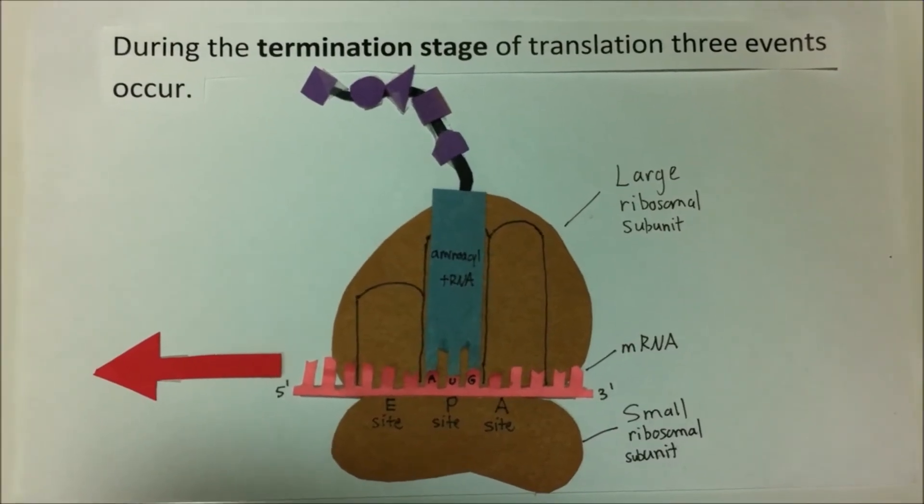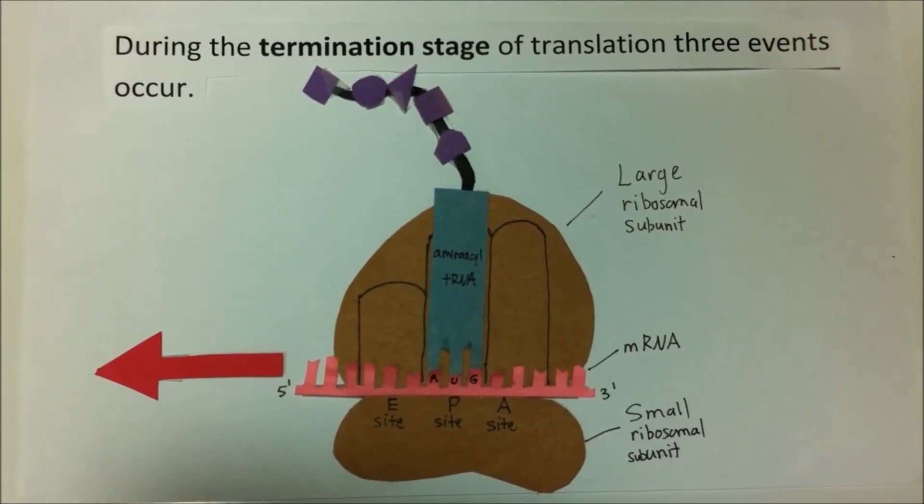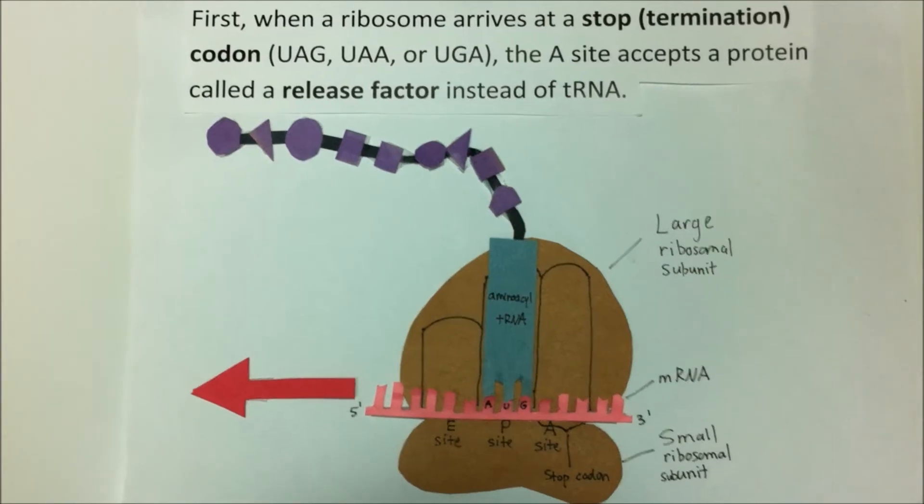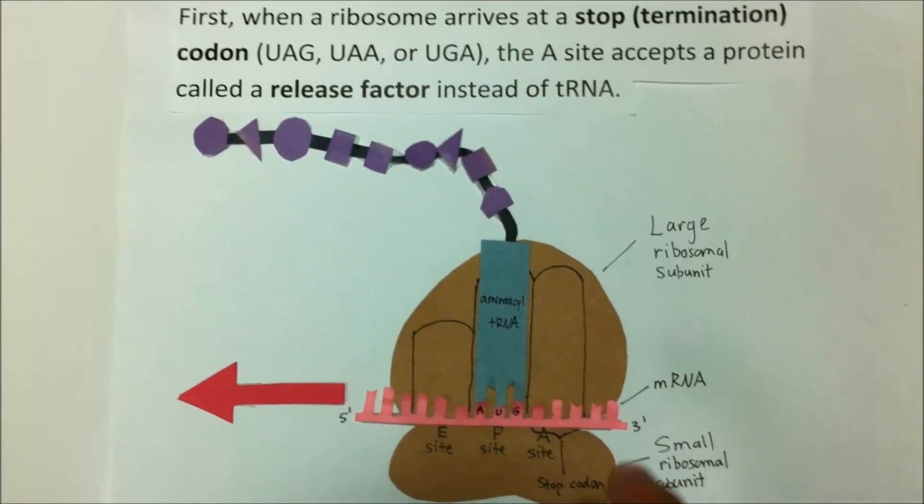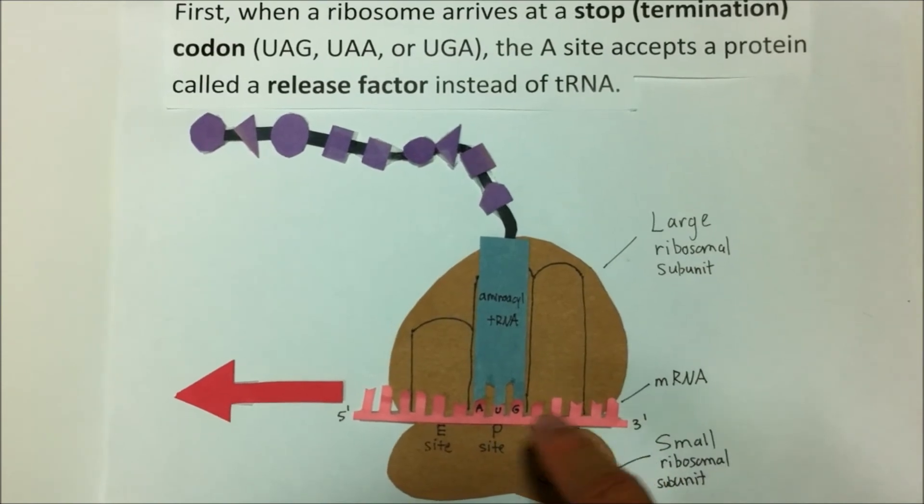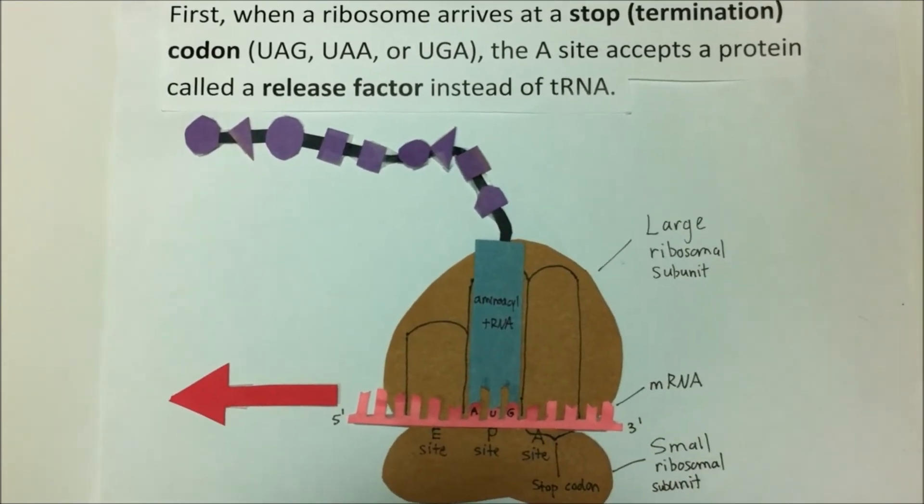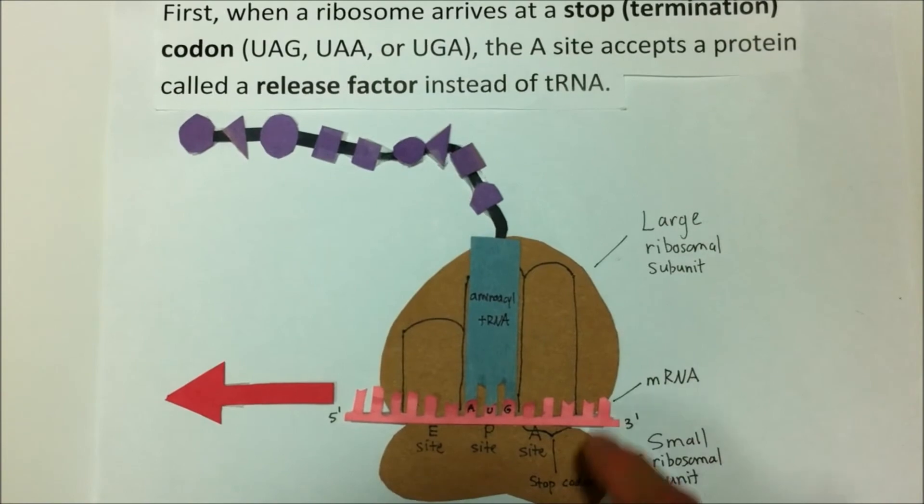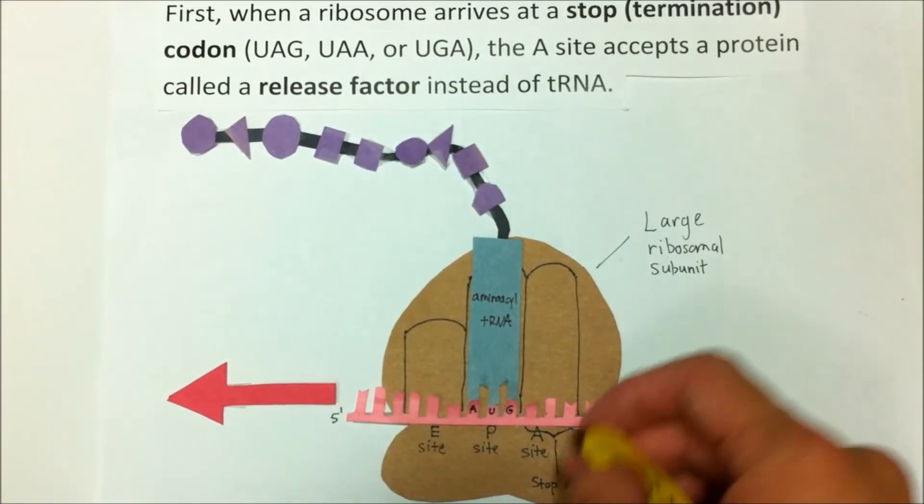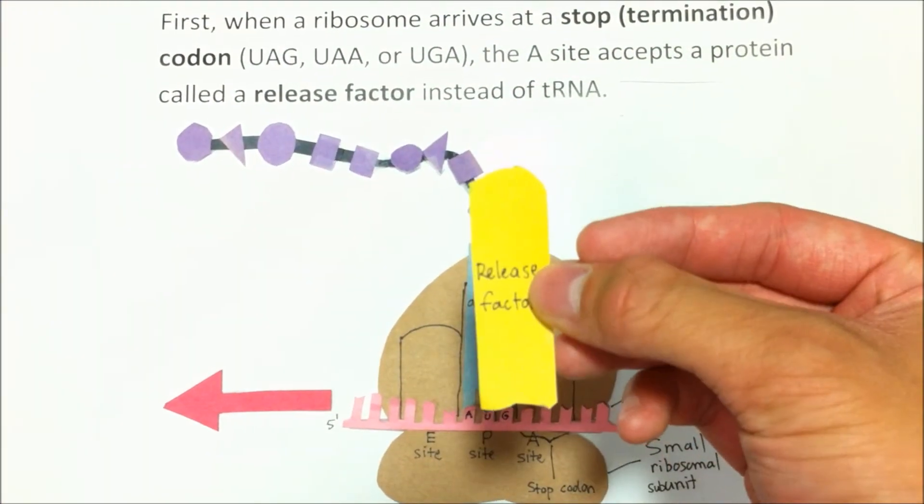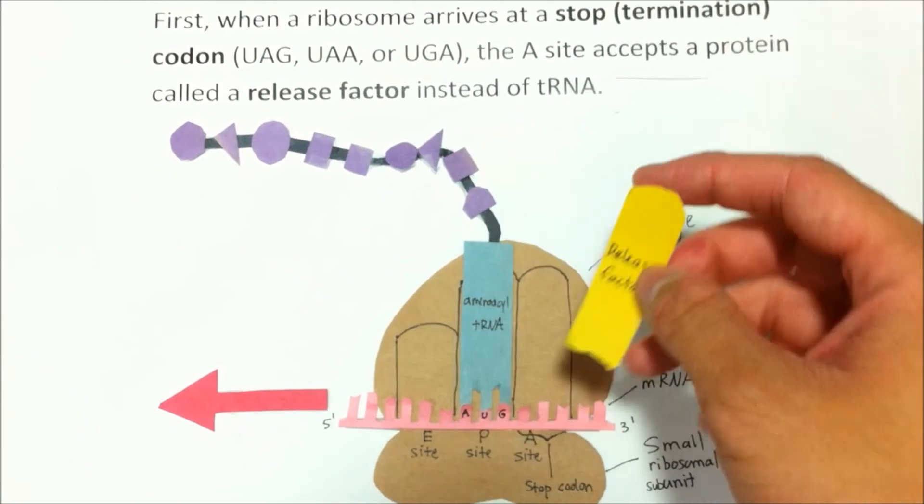During the termination stage of translation, three events occur. First, when a ribosome arrives at a stop or termination codon, UAG, UAA, or UGA, the A site accepts a protein called a release factor, instead of the typical tRNA.